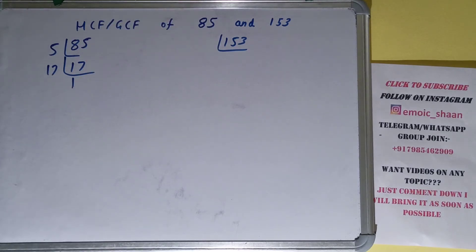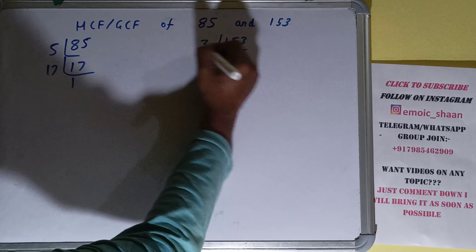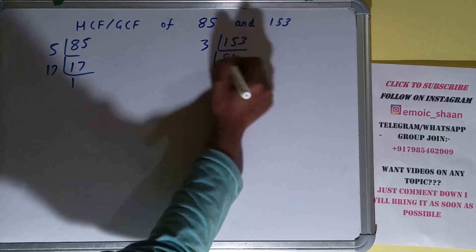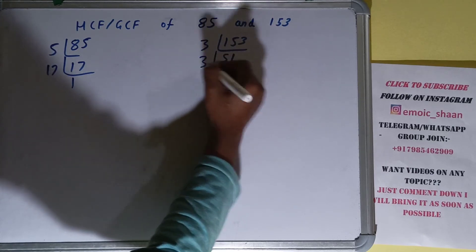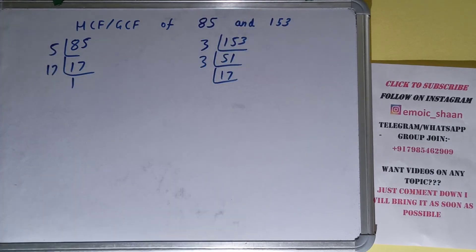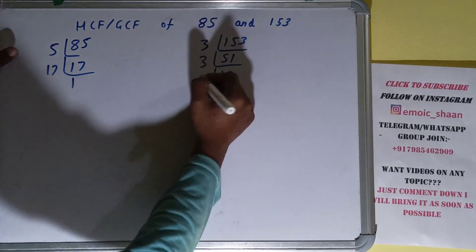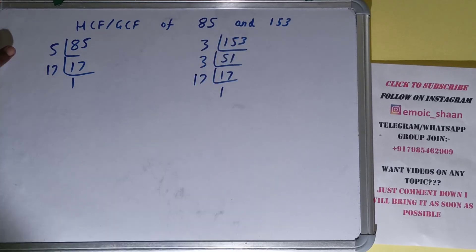Now we need to do the same with the number 153. Is 153 divisible by 2? No. By 3? Yes, and we'll be left with 51. 51 is again divisible by 3, leaving us with 17. Now 17 is not divisible by 3 because 17 is a prime number, so it is only divisible by itself, and we'll be left with 1. So we are done with the prime factorization step.